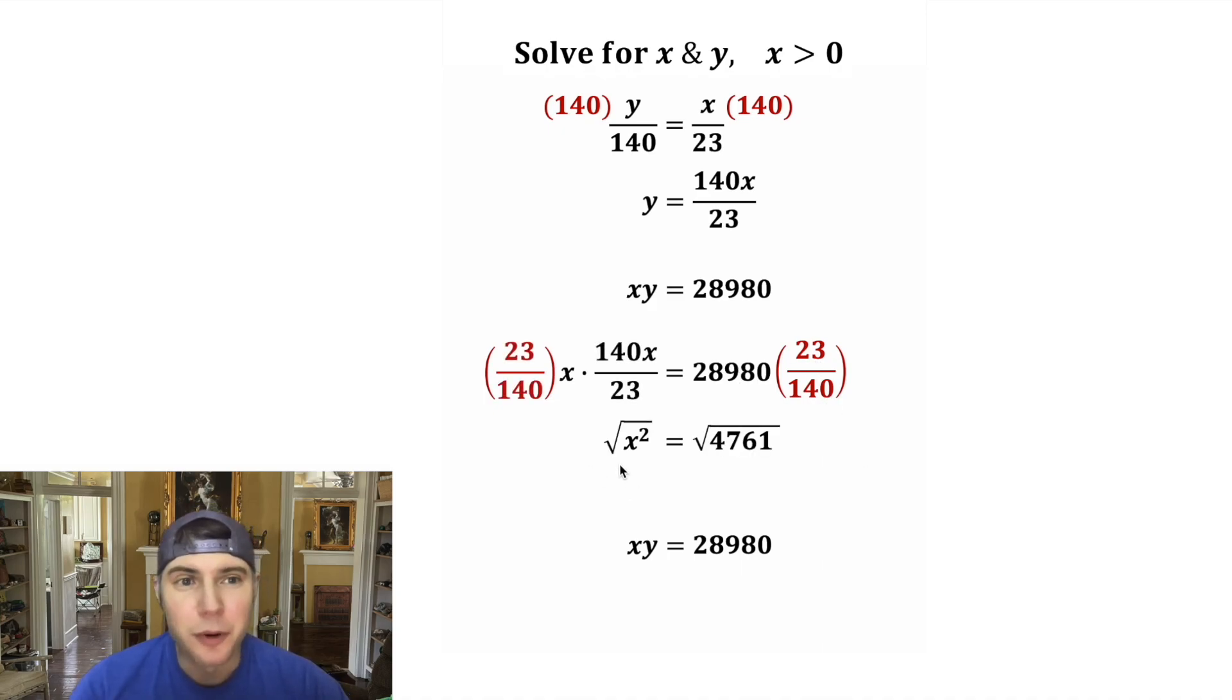So now to solve for x, let's square root both sides. Since we know that x is positive, the square root of x squared is going to be x. And the square root of 4761 is 69. Nice. And we can put a box around that.